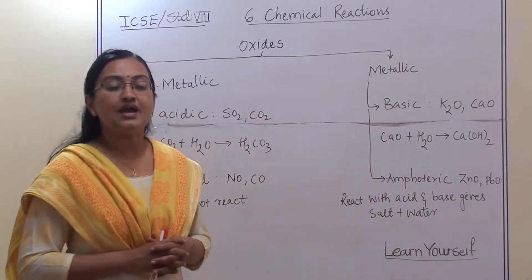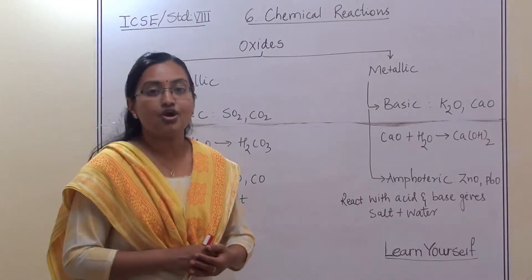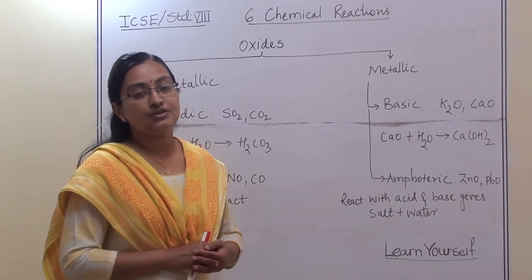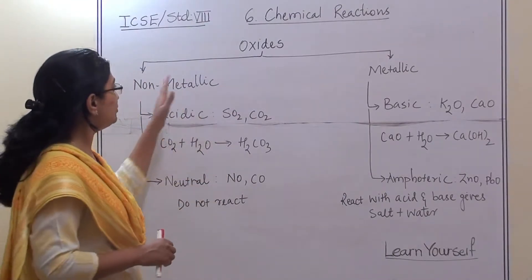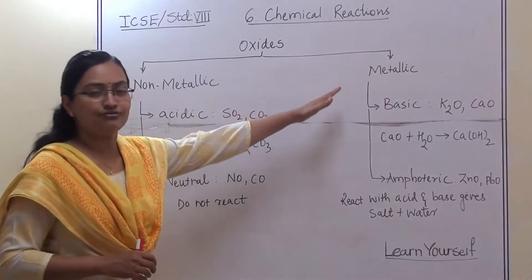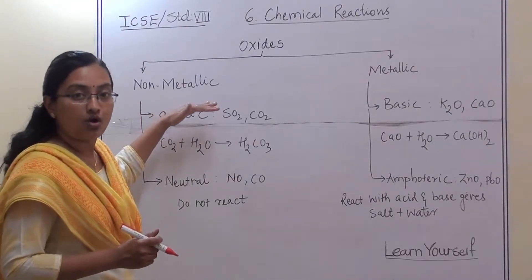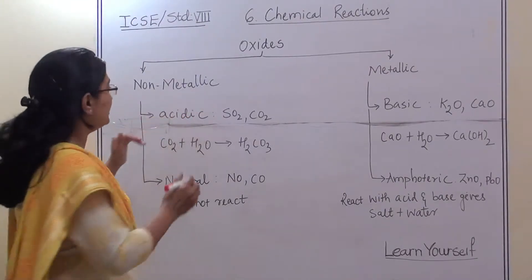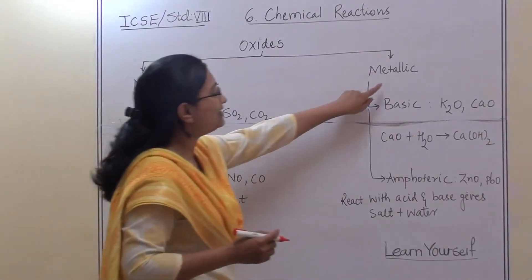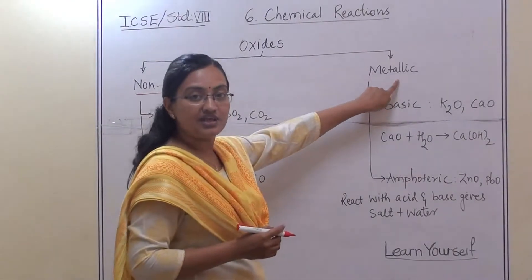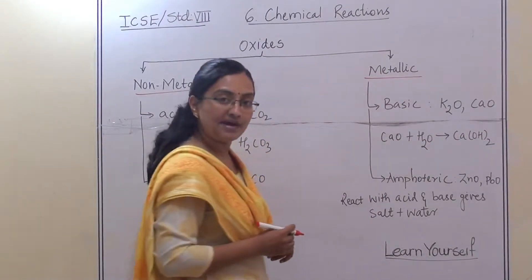Now we have to learn about the nature of these particular oxides. There are basically two types of oxides. When a non-metal reacts with oxygen, it forms a non-metallic oxide. When a metal reacts with oxygen, it forms a metallic oxide.